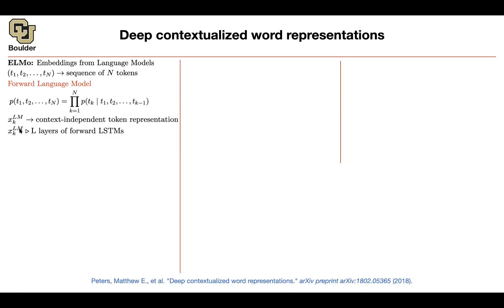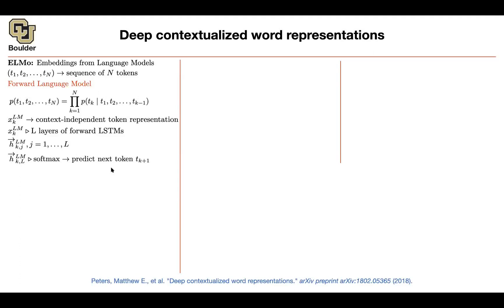You take that token vector x_LM along with the other vectors and push them through L layers of LSTMs — a sequence goes in, a sequence comes out, you push it through the next LSTM, and repeat. We are still using LSTMs, pushing through L layers. In the end you get h_forward for index k at each of the j layers. Importantly, you keep track of the representation after each LSTM — not only the last layer but all intermediate layers. The hidden state of the last layer is pushed through a softmax to predict the next word.